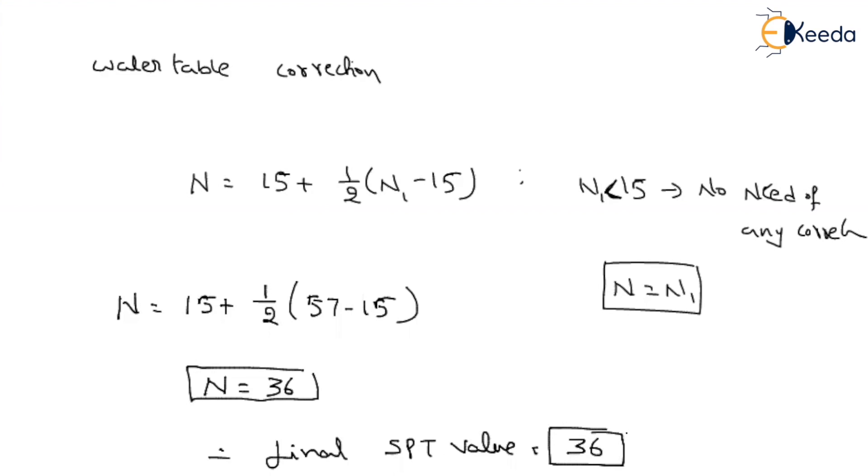You have to remember the conditions also. Overburden, you should not apply if your overburden pressure is greater than 280 kN per m2. And water table correction, you should not apply if your penetration value is coming less than 15. Hope you guys understood. Thank you.